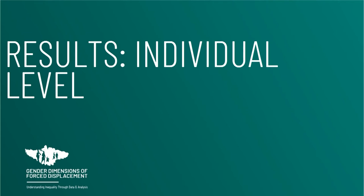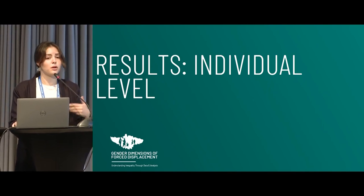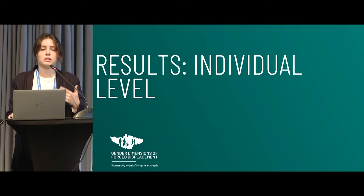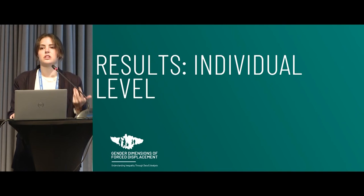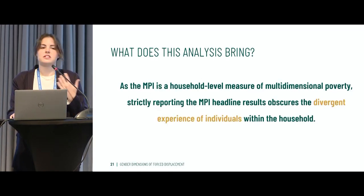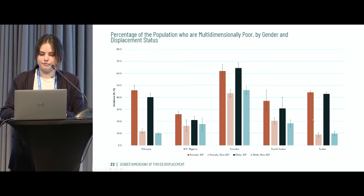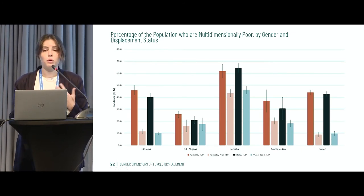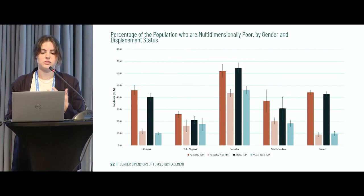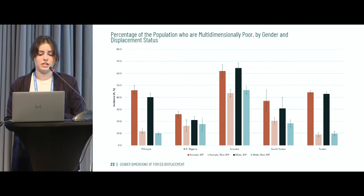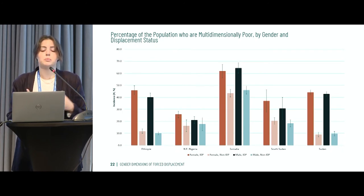Looking at the individual and intra-household level results — this is some of the innovative work we've been doing as part of this research series, because the MPI has traditionally been looked at from a household lens, and we're trying to break that barrier down to really understand the experience of individuals. Here, for the five countries, is the percentage of the population who are multidimensionally poor by gender and by displacement status. In Ethiopia and Somalia, women and girls who are forcibly displaced are experiencing a significantly higher rate of multidimensional poverty than their non-displaced counterparts. In northeast Nigeria, the sample size means some findings weren't necessarily significant, but in Somalia, Sudan, and Ethiopia, the differences are much larger.